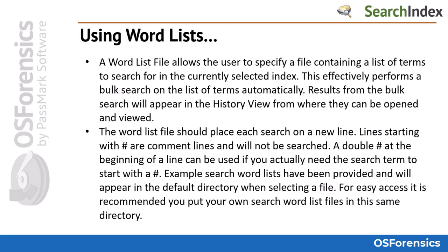A word list file allows the user to specify a file containing a list of terms to search for in the currently selected index. This effectively performs a bulk search on the list of terms automatically. Results from the bulk search will appear in the history view from where they can be opened and viewed. The word list file should place each search on a new line.